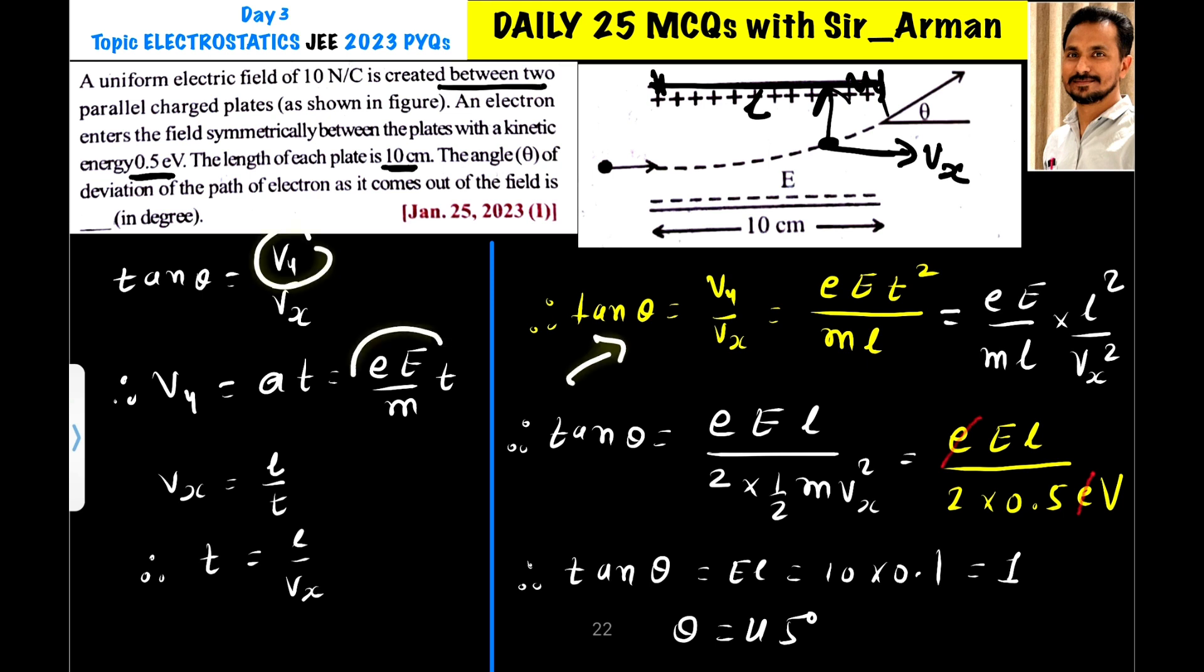So tan theta, vy is eE by m into t, so it is eE by m into t. And here we have vx. So vx is l by t. So t will go up. So this becomes eE t squared by ml.